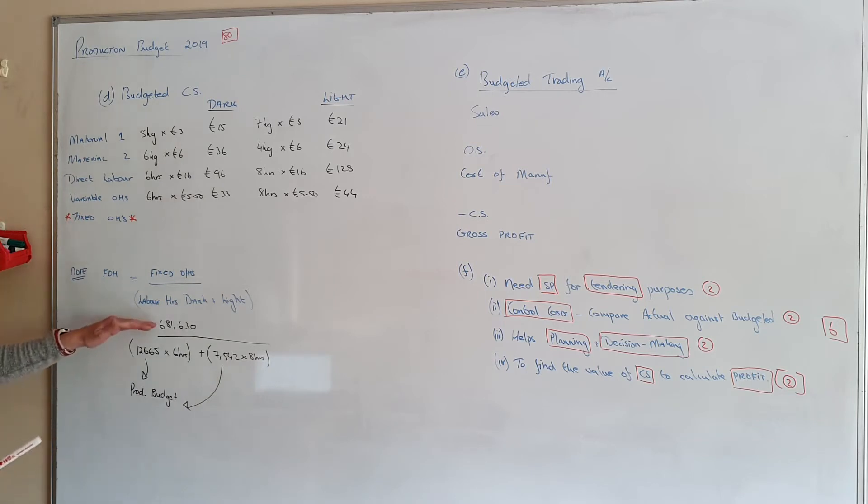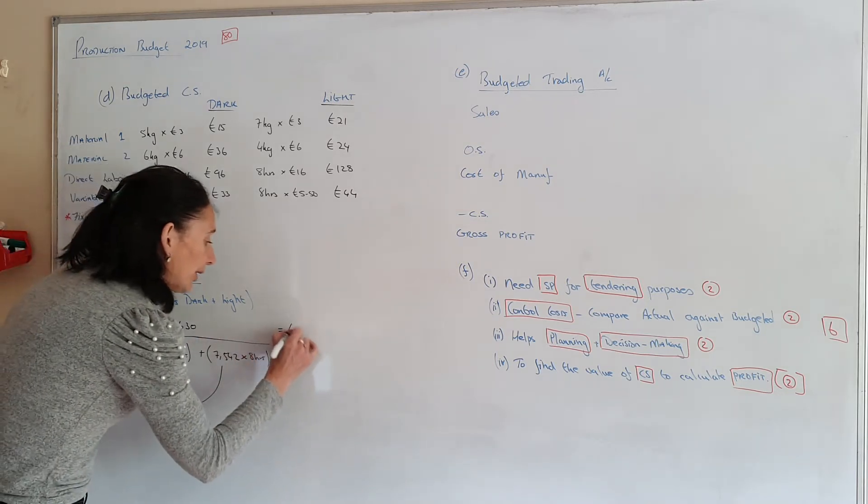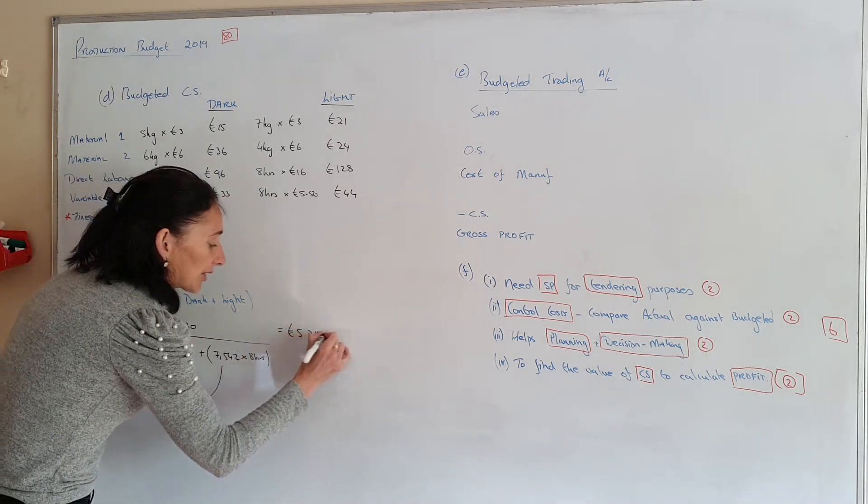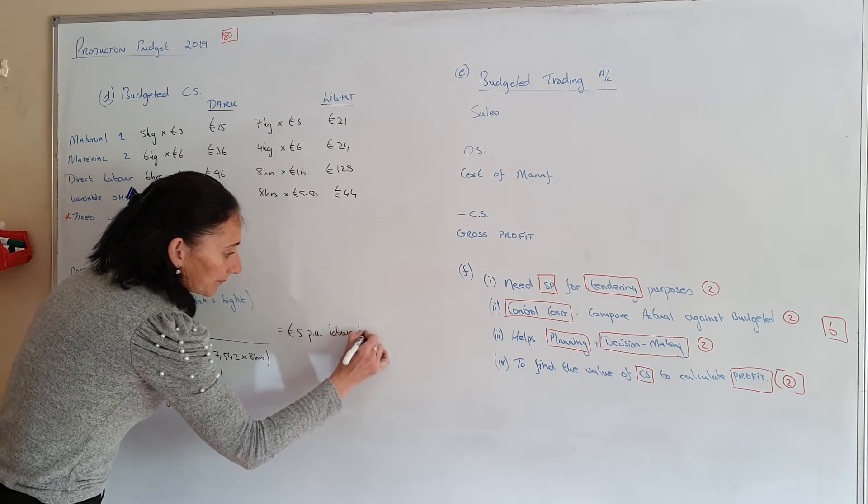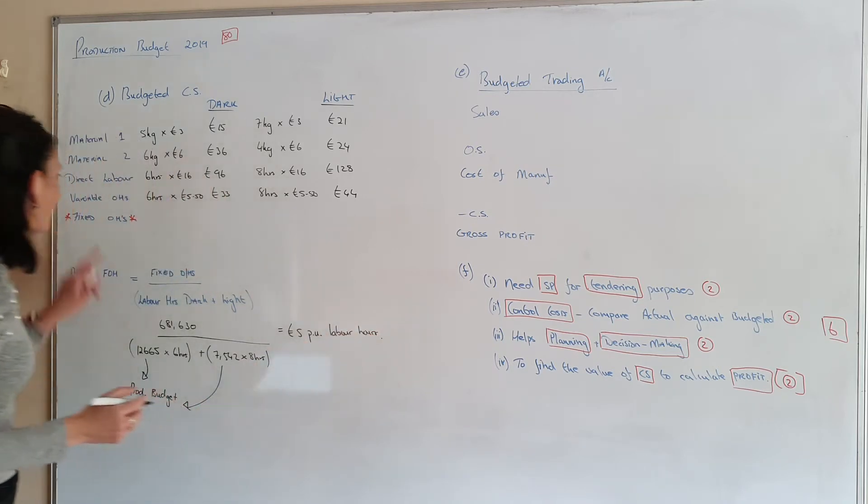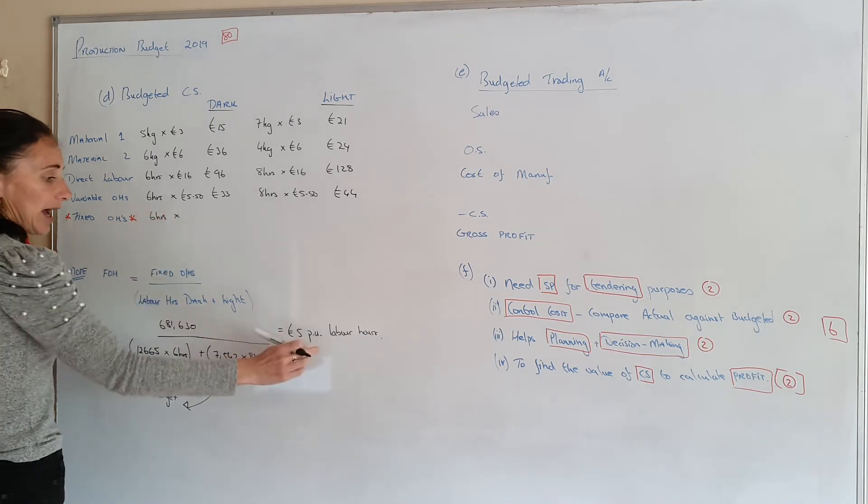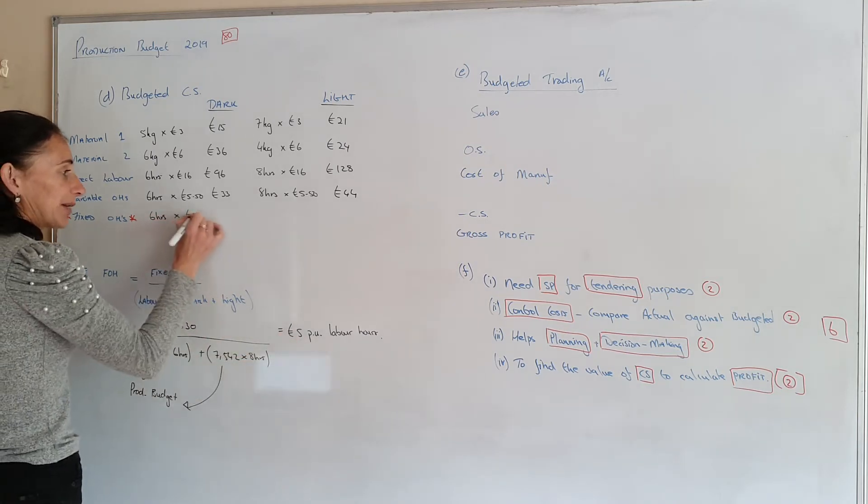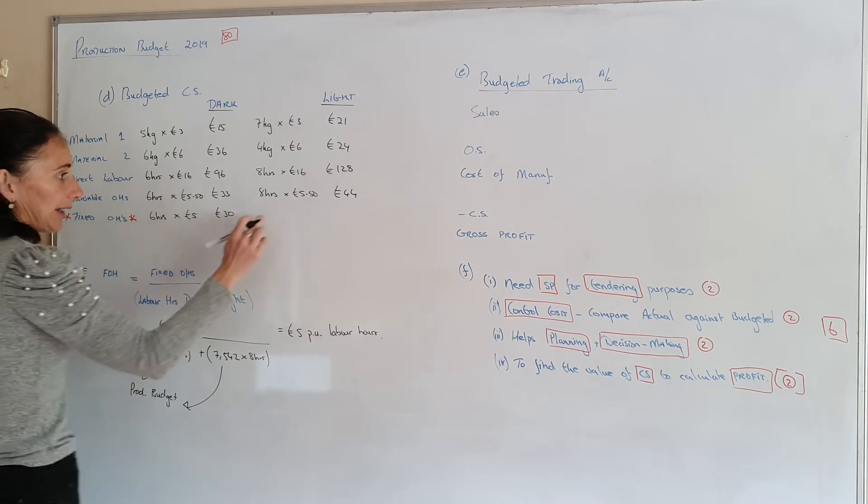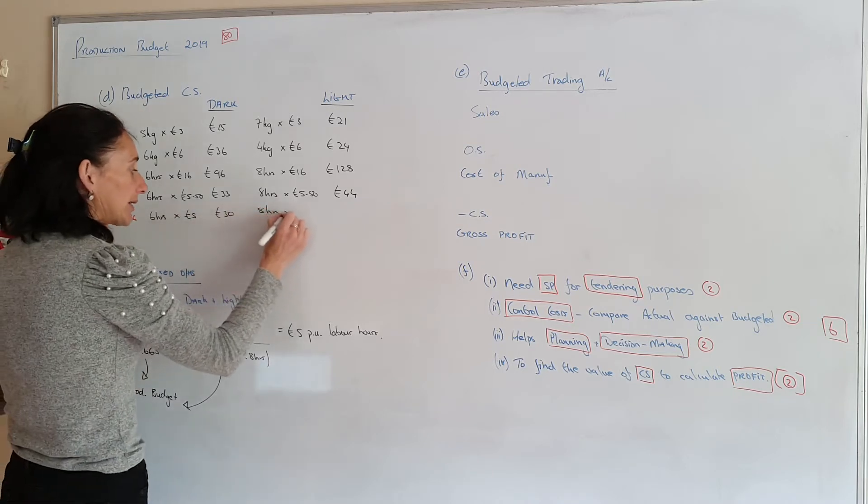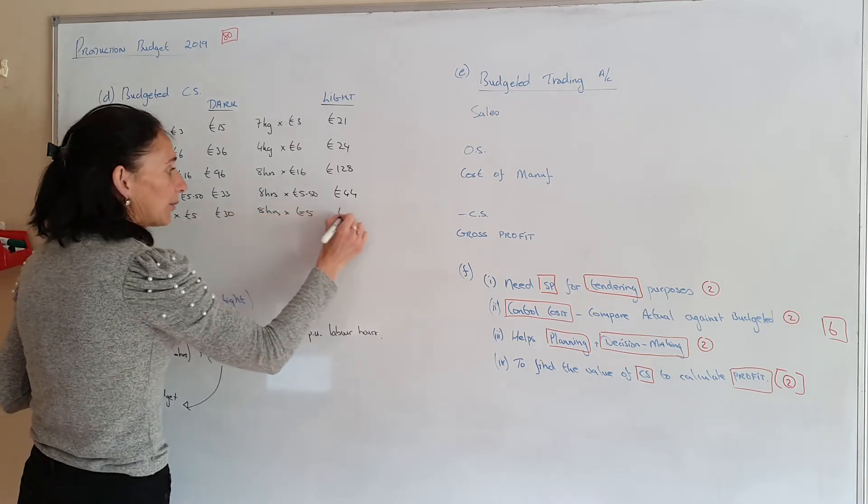So your fixed overheads we're going to divide them by all the labour hours of all the units that we make. And we get that it's €5 per unit of labour hours. So for fixed overheads the labour hours are 6 hours. And fixed overheads are €5 per labour hour. Again here you're going to work on it for 8 hours. And it's €5 which is €40.